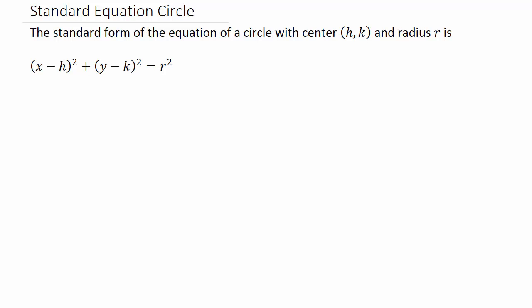Finding the equation of a circle in standard form given a graph. The standard form of the equation of a circle with center (h, k) and radius r is: (x - h)² + (y - k)² = r². To find the equation of a circle, you need the center (h, k) and the radius r.